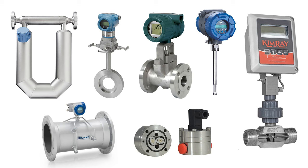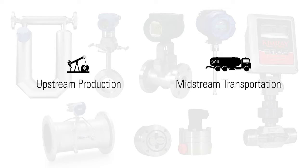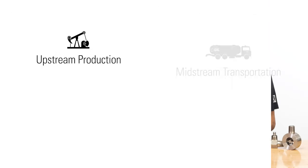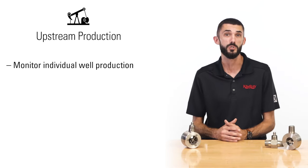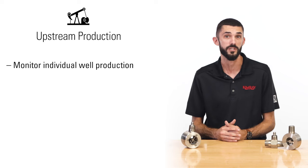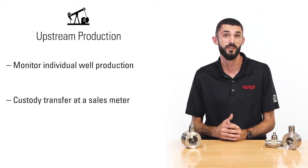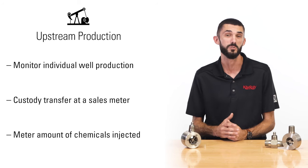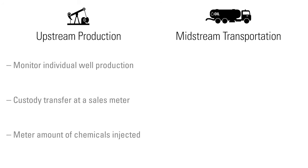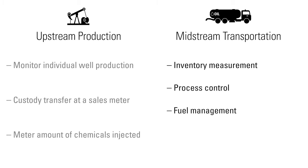Each one of these meters can be used in both upstream production and midstream transportation. In upstream production they can be used to monitor individual well production, custody transfer at the sales meter, or to meter the amount of chemicals being injected. In the midstream they can be used for inventory measurement, process control, fuel management, and regulatory reporting.